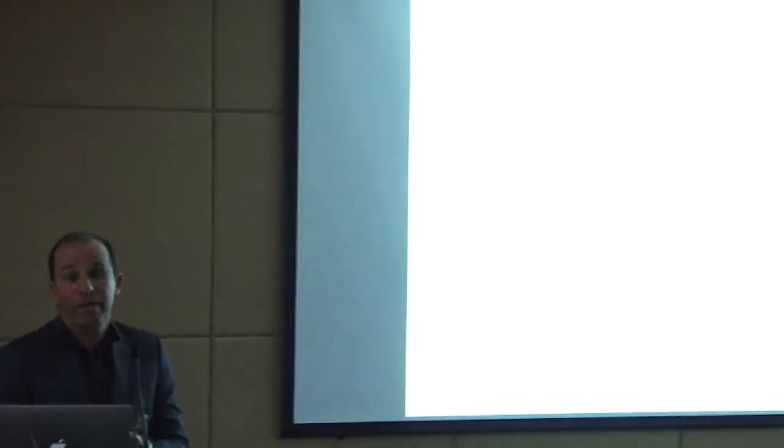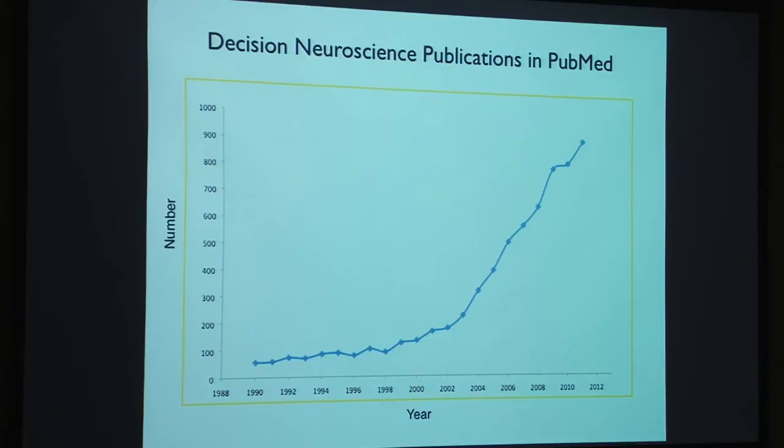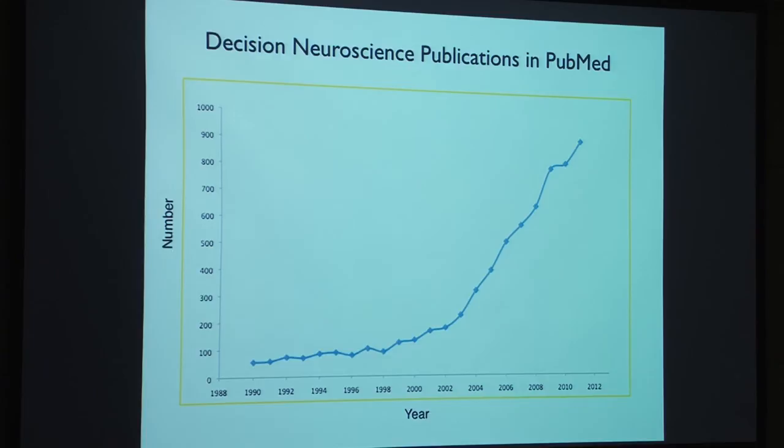Neuroeconomics has just grown asymptotically over the course of the last decade or so. Here I'm plotting number of annual publications in the PubMed database. And you can see here in 1990 just a few papers, mostly from Antonio Damasio's group, that become really asymptotic. This is 2012 with almost 1,000 publications that use the words decision-making and neuroscience or neuroeconomics in them. And so we have every expectation that over the course of the next decade, this will become one of the dominant fields of interdisciplinary study at the edge of the social and natural sciences.